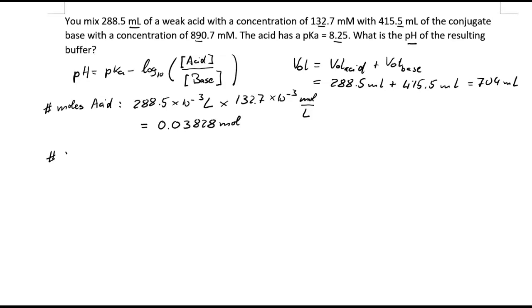We can do the same thing for the base. We calculate the moles of the base, so again we multiply the volume: 415.5 times 10 to the minus 3 liters times the concentration, and that is 890.7 times 10 to the minus 3 mole per liter. Again we see the liters cancel out and we've got mole left. This would give us, if we put that into a calculator, roughly 0.37009 mole.